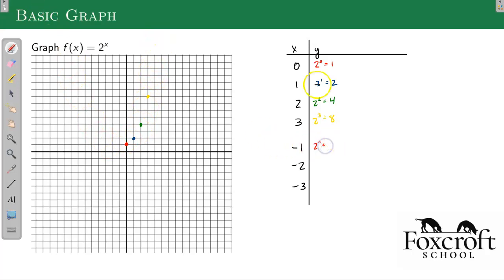2 to the negative 1, that's just a negative exponent, that's 1 over 2, which is a half. So that's going to be negative 1, a half. 2 to the negative 2 is 1 over 2 to the positive 2, which is 1 fourth. So it's right about there.